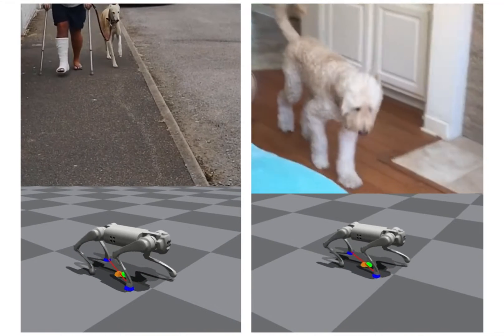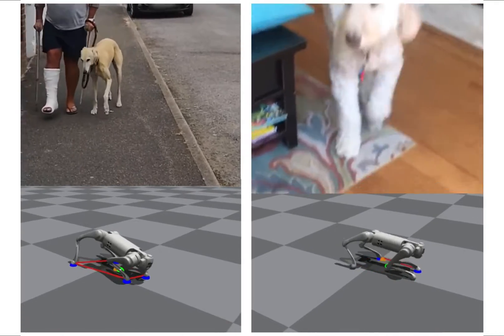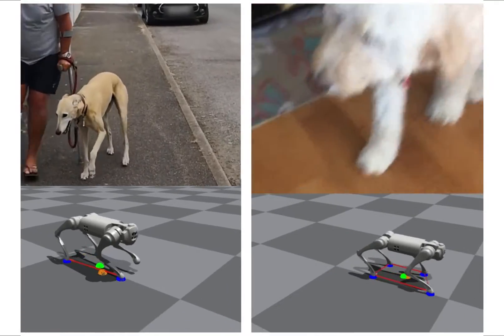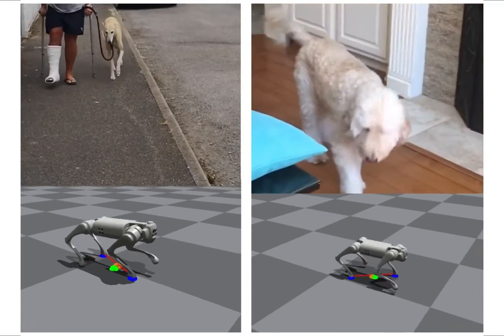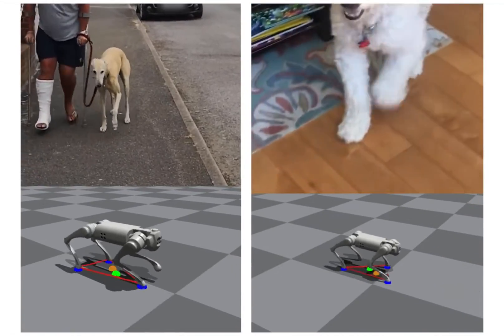In this work, we present an adaptive control framework that enables the quadrupedal robot to handle failures in the real world. We aim to mimic the injured or disabled animals that can maintain balance with limping or even three legs.